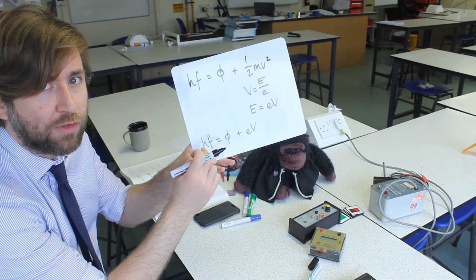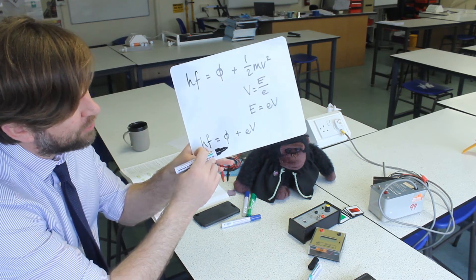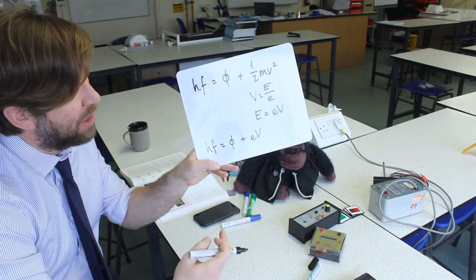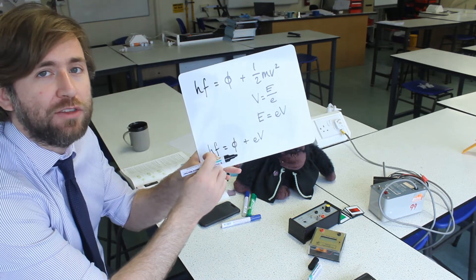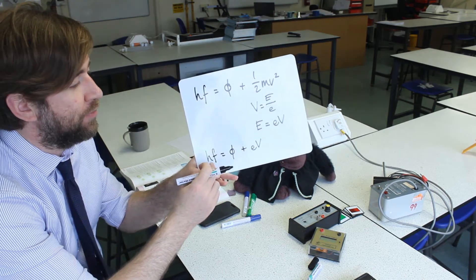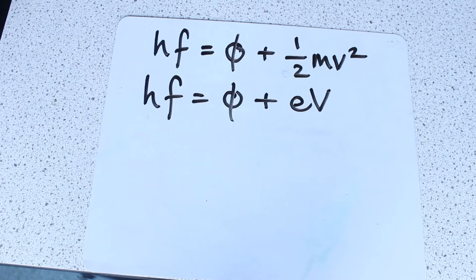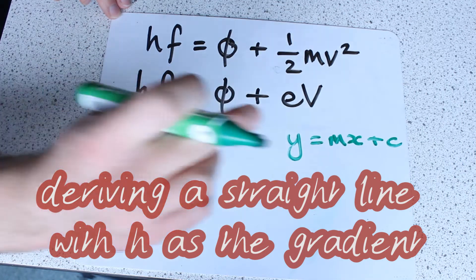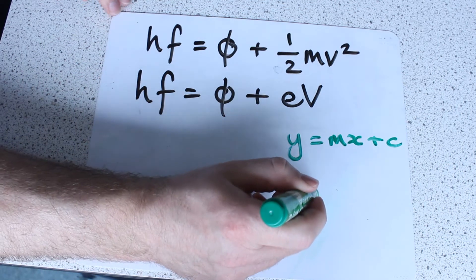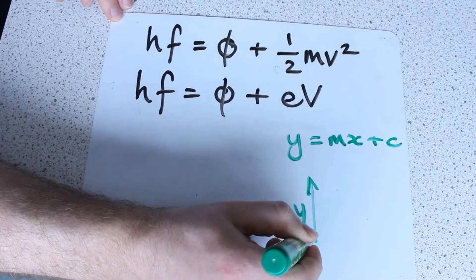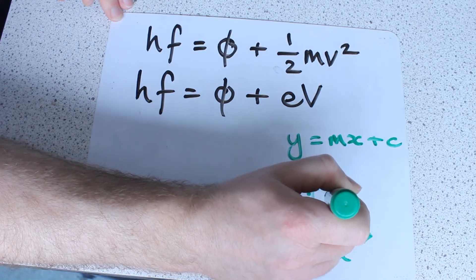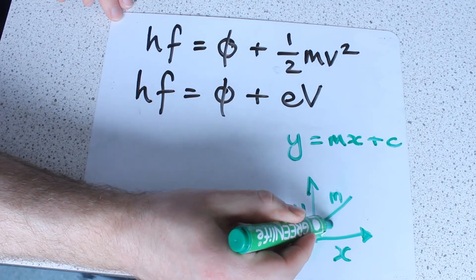Now hopefully you're far enough along in your physics to understand that when we want to measure something as accurately as possible, we try and design a graph to allow us to get our result as the gradient of that graph. To get a gradient we need to rearrange this in the form Y equals MX plus C. And then this is going to tell us what we're going to need to plot where on our graph. Because even from our GCSE we're familiar with graphs of Y, X, a gradient being M, and an intercept being C.